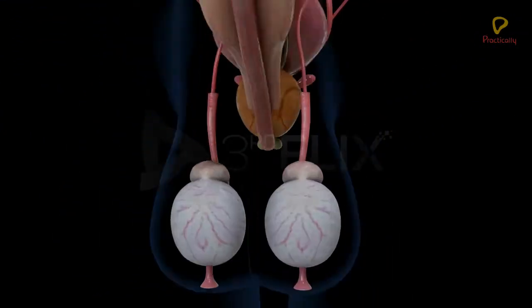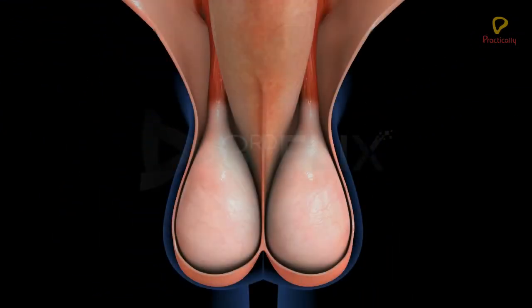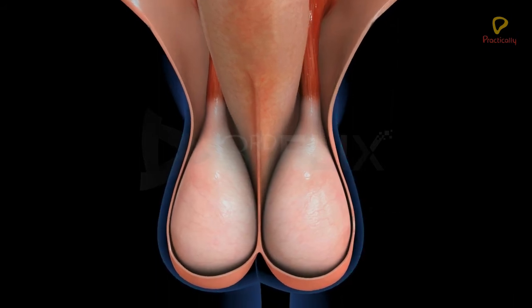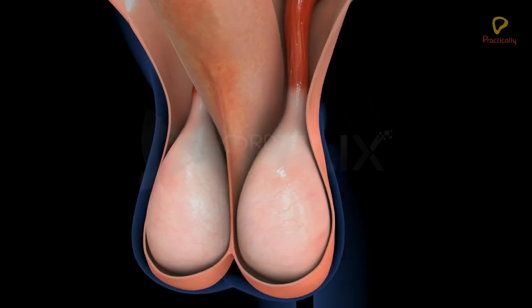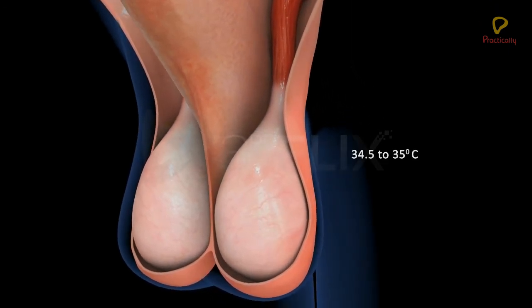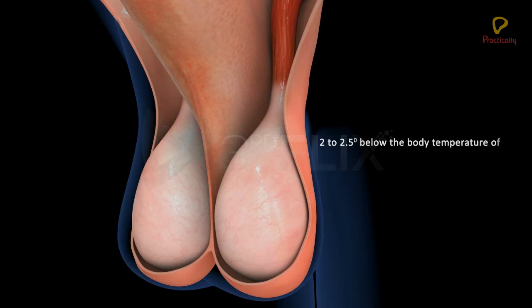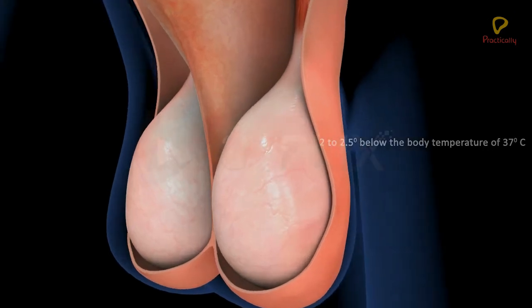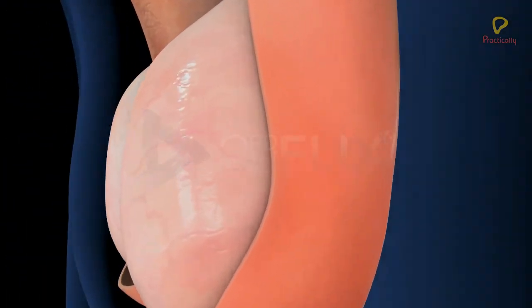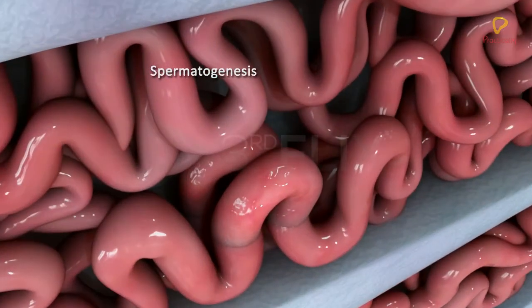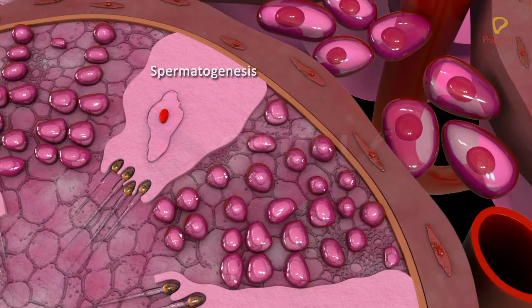The testes are suspended outside the abdominal cavity within a pouch called the scrotum. The scrotum helps in maintaining the temperature of the testes between 34.5 to 35 degrees Celsius. This is 2 to 2.5 degrees below the body temperature of 37 degrees Celsius. This lower temperature is essential for spermatogenesis, that is, the development of sperms.